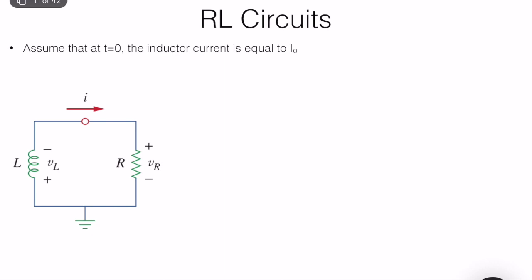Let's consider this simple circuit which has an inductor and a resistor, nothing else. At t = 0 it is given that the inductor current is I₀, the initial current value, and the goal is to find i(t). Assuming current flows in the assigned direction, by the passive sign convention VL and VR are written accordingly. Applying KVL: VL + VR = 0.